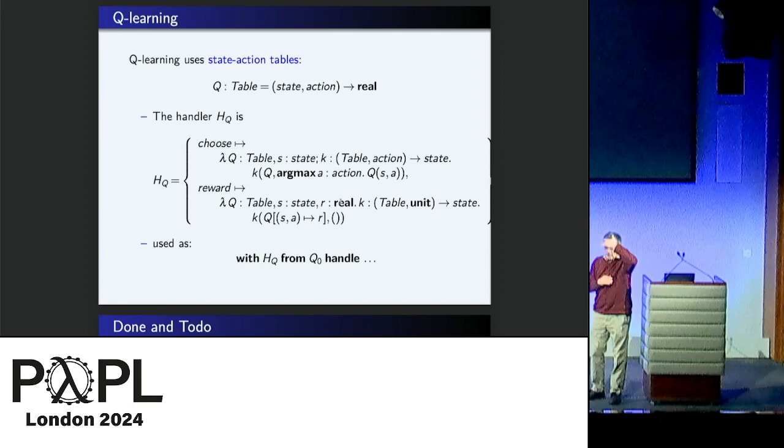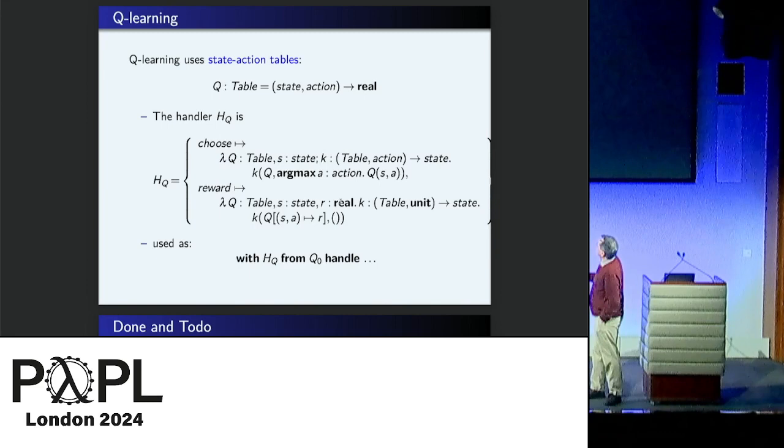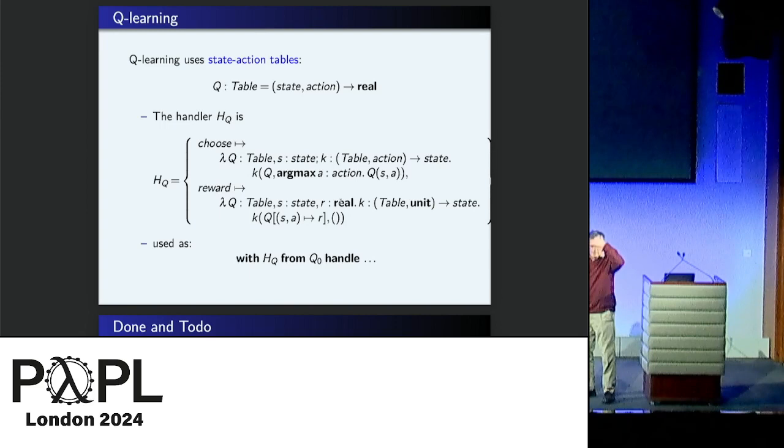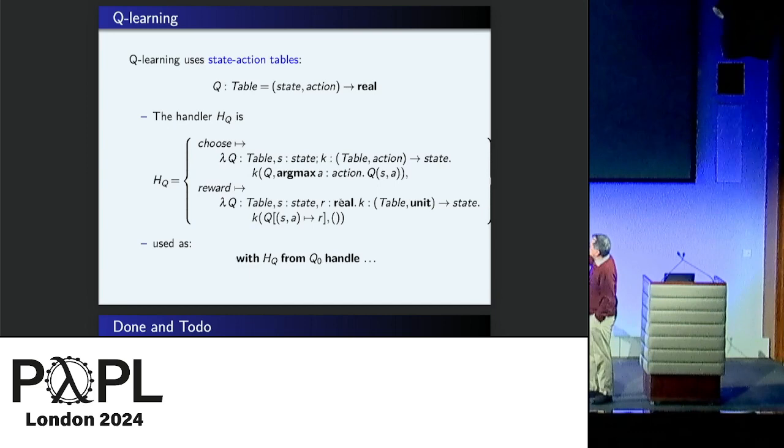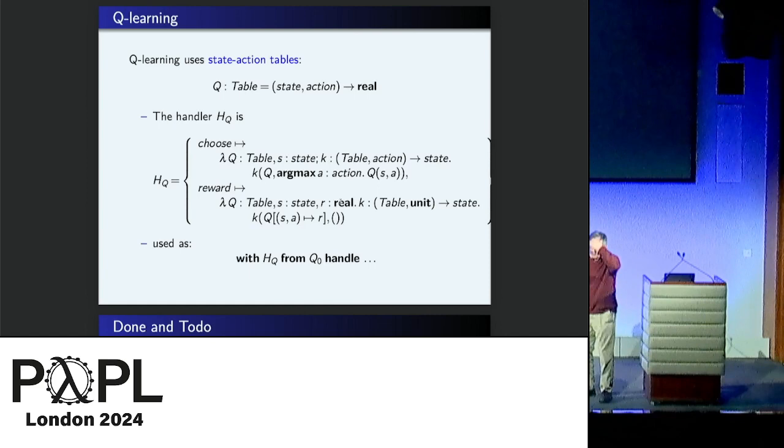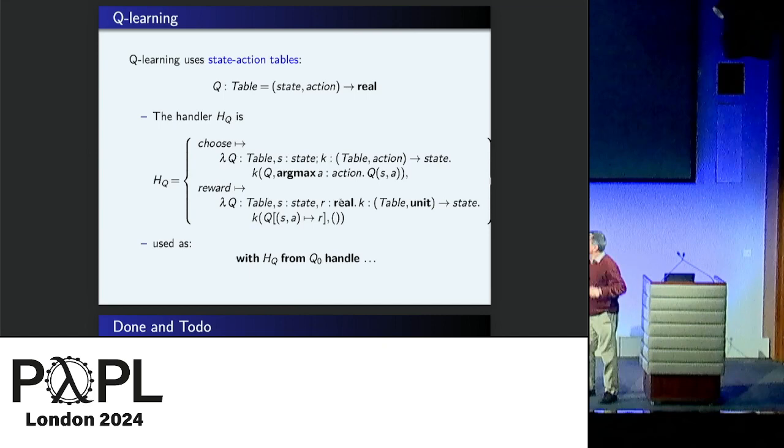So Q-learning is where you keep a table. This is the simplest thing possible. A table which tells you, given a state and an action, what it's going to cost you. So you're just going to learn the reward function of the Markov process as you wander along. So the point is, relative to what I said before, the Q is the parameter. So the reward is going to give more information to the Q. And the choose will have that Q and use that Q to make its choice. So they'll talk to each other. That's the idea.